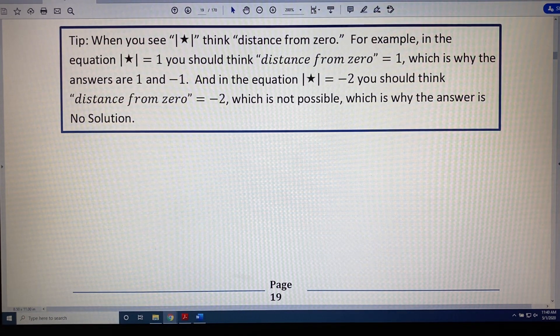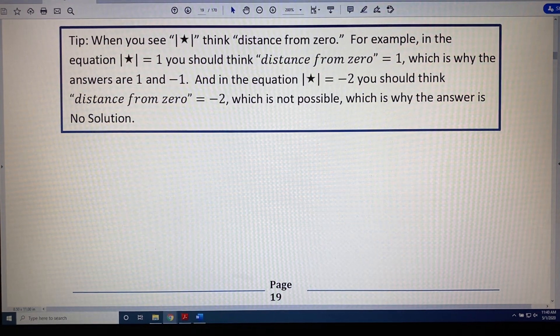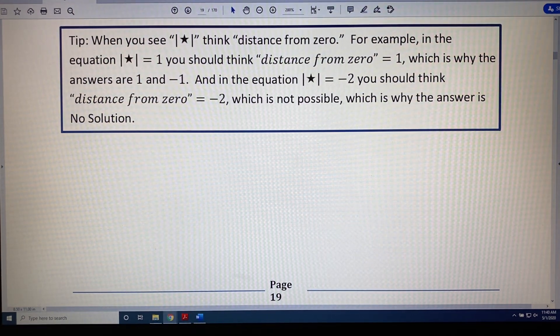And in the equation absolute value of star equals negative 2, you should think distance from zero equals negative 2, which is not possible, which is why the answer is no solution.